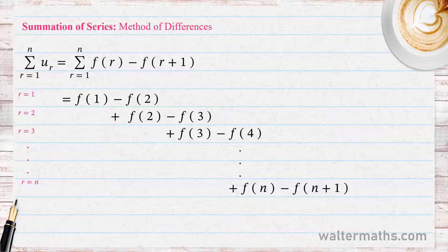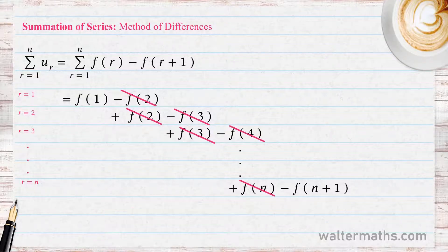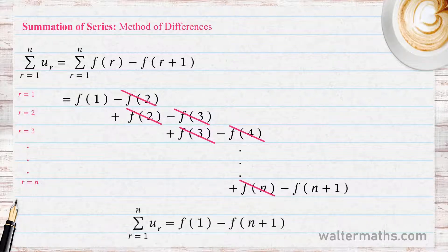Looking at this series, if we add up the terms, terms like minus F(2) plus F(2) add up to zero, minus F(3) plus F(3) gives zero, and so on. All the terms in between cancel out, so the only terms that remain are F(1) minus F(N+1). Therefore the summation from R equals 1 to N of U sub R equals F(1) minus F(N+1).